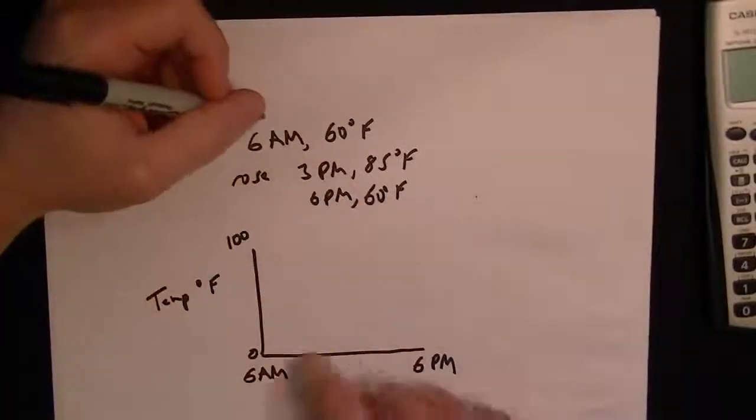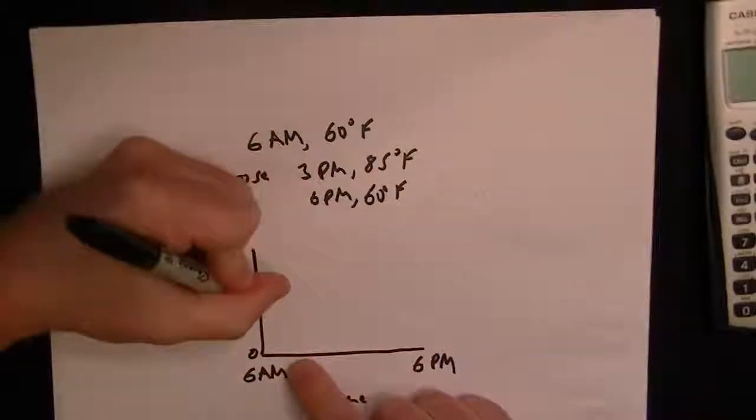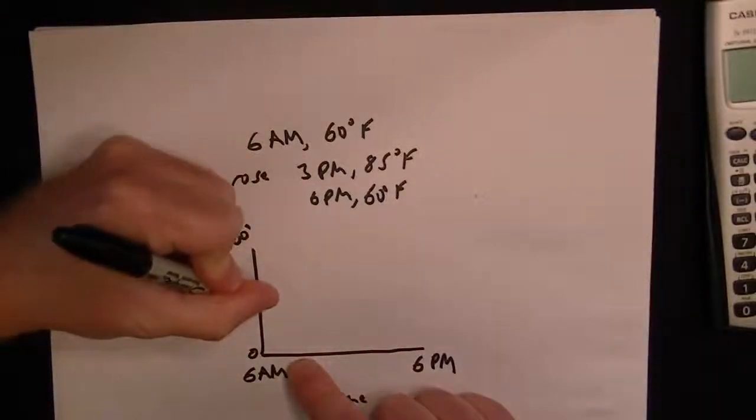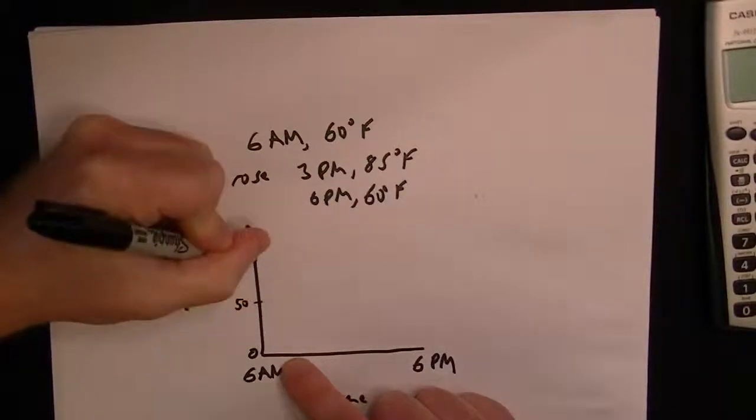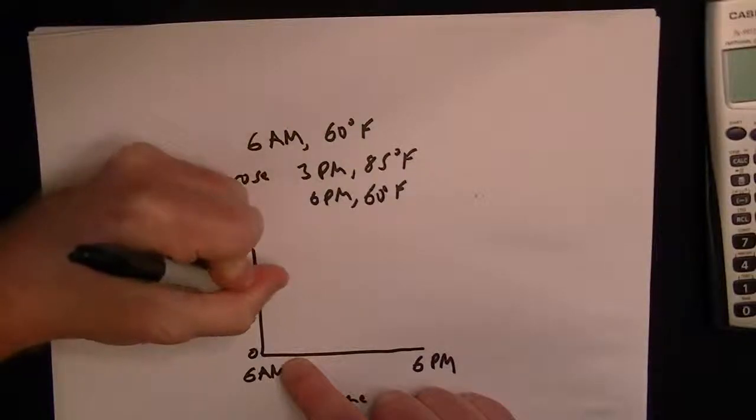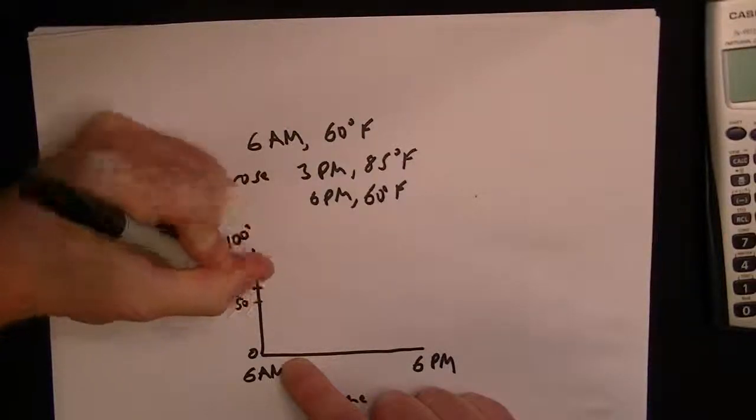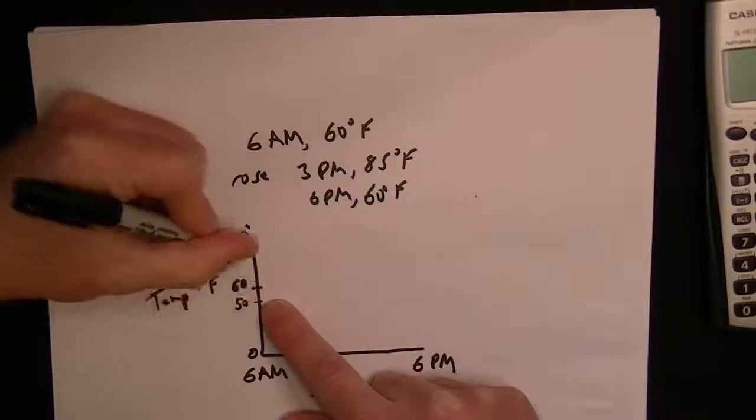Okay, so at 6 AM it's 60 degrees. So we'll say the halfway mark is around there, so that would be 50. So I'm just labeling it, and then you get a sense of the dimension. So we'll just put that's about where 60 would be, is about one-fifth of the way up to 100.